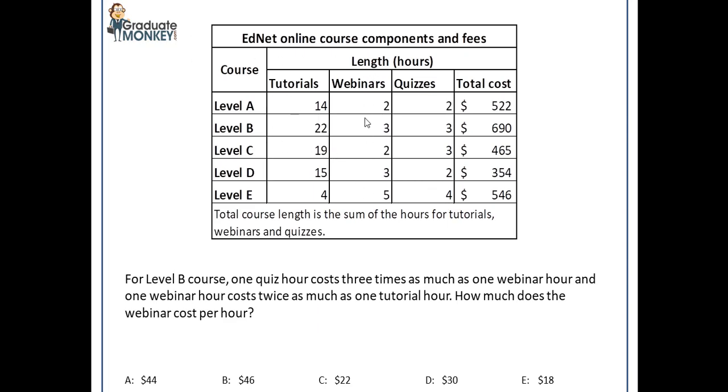Here you have a data table on which this question is based. The data table contains information on components and fees of an online course. You can see three components: tutorials, webinars, and quizzes, and then there's a total cost per level of the course. There are five stages or levels of the course, so for each level there are a certain number of tutorials, webinars, and quizzes, and then you've got the total cost.